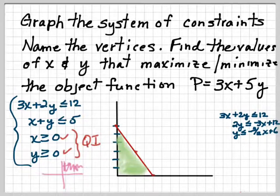And then I draw my line, and since this is a less than, and I know it's only in the first quadrant, the green area is what we have so far.